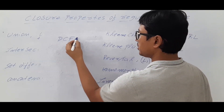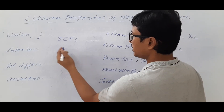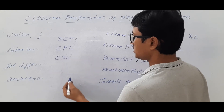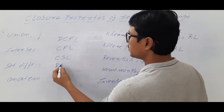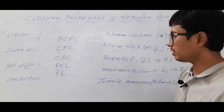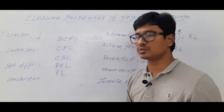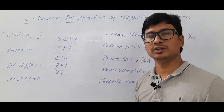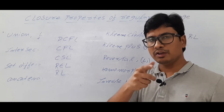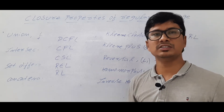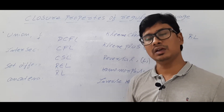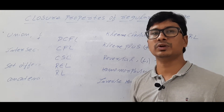Similarly, we have closure properties for deterministic context-free languages, context-free languages, context-sensitive languages, recursive enumerable languages, and recursive languages. Now, for recursive languages you have a halting Turing machine. When discussing context-free languages, we discussed deterministic pushdown automata and non-deterministic pushdown automata.